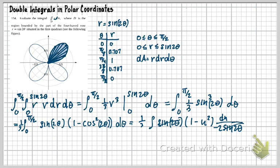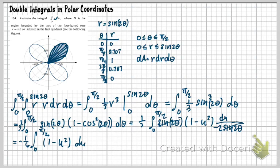So we have negative one-sixth times the integral from zero to pi over two of one minus u squared du. Integrating gives negative one-sixth times the quantity u minus one-third u cubed, evaluated from zero to pi over two. Now we need to substitute back in terms of theta before evaluating.